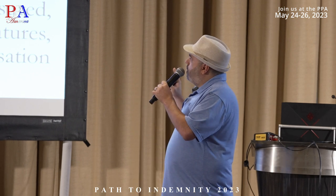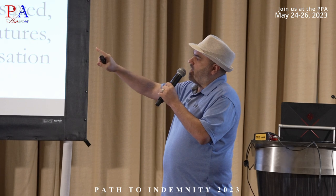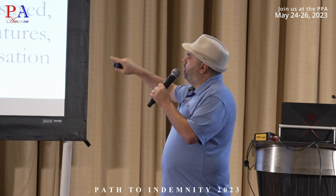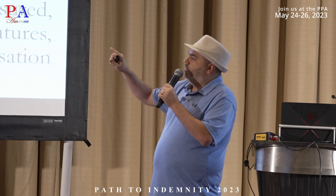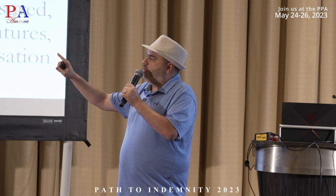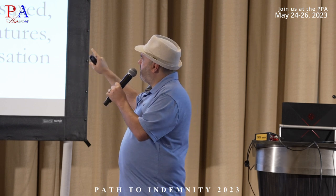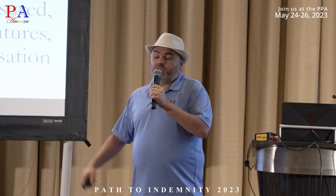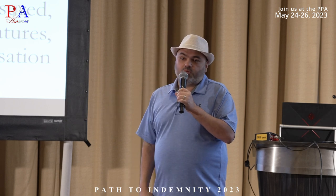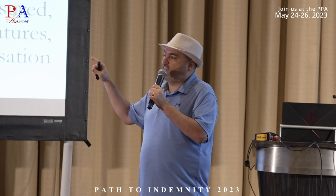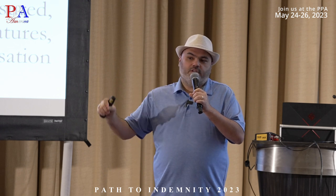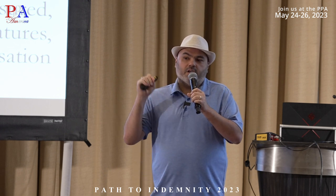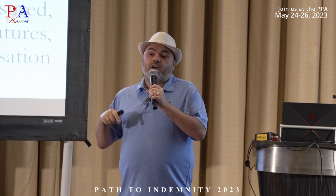Required contract elements include: home state business address and phone, license number, and the title must actually say 'public adjuster contract.' Also required: insured's contact info and policy number, description of the loss and its location, and description of services to be provided to the insured. That last one — talk to a compliance attorney in your state and ask what that means. Does it mean 'I'm providing public adjusting services' or does it mean spelling out every specific task?